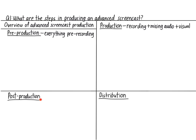I'm including mixing in the production phase because you'll do the mixing in the same program that you use to record your screencast. Post-production is everything you do after you record your video, and here will consist of editing the audio and visual aspects of your video. Distribution involves posting your video on YouTube and/or on a learning management system like Canvas.